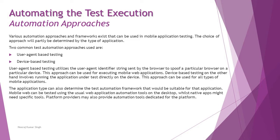The very first thing we are talking about is automation approaches — what exactly they mean and what common test approaches can be used specifically for mobile application testing. There are various automation approaches and frameworks which exist for mobile application testing. The choice of approach will partly be determined by the type of application, so you need to understand that the application type is a contributing factor in deciding which approach will be used for automation.